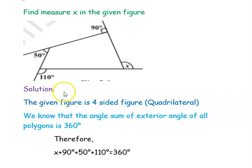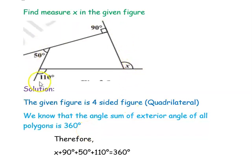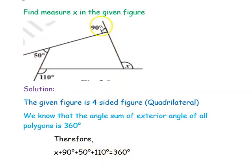Now we will move on to solving the question. The given figure is a four-sided figure, that is a quadrilateral. Using the formula, we can find the angle sum of exterior angles of the quadrilateral. You know that if you add all the exterior angles, it should be equal to 360 degrees. So we are adding all the exterior angles and equating to 360 degrees: x + 90° + 50° + 110° = 360°.